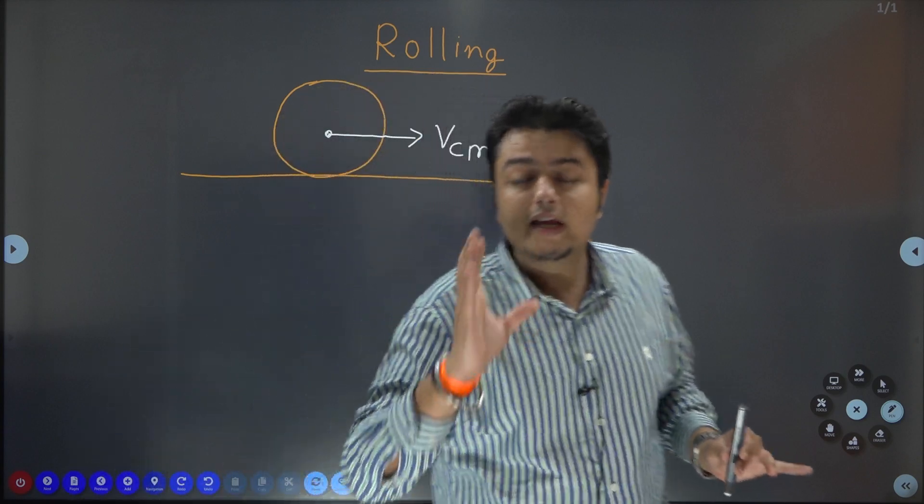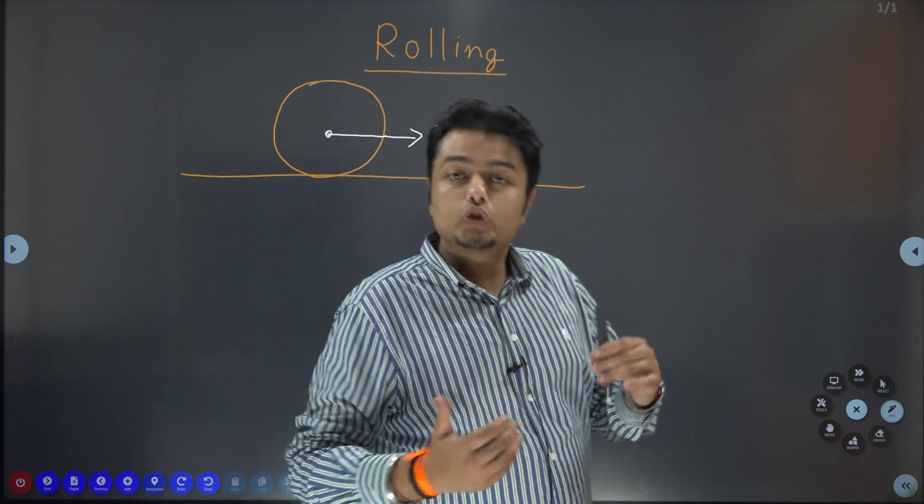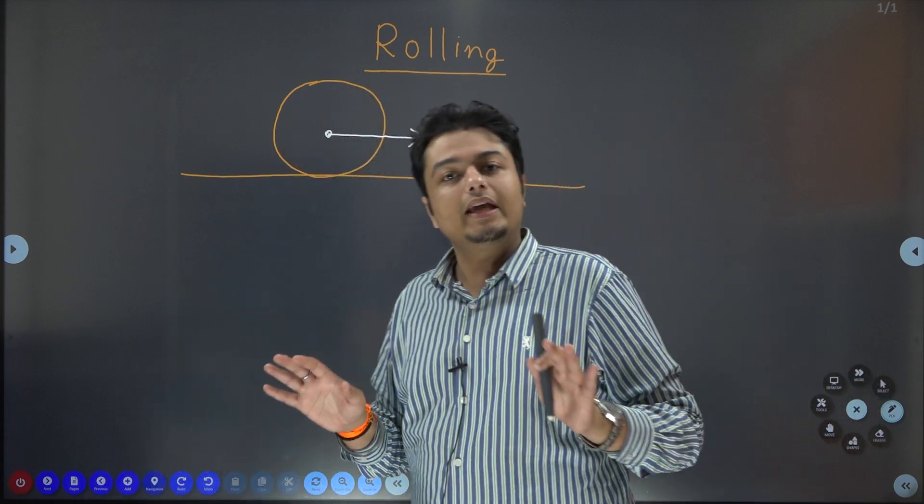Example: ring, disc, hollow sphere, solid sphere, hollow cylinder, solid cylinder. Only these objects can perform rolling.